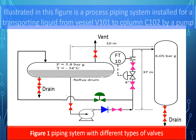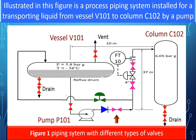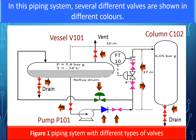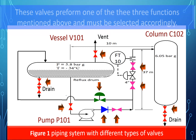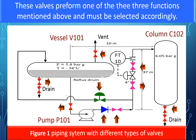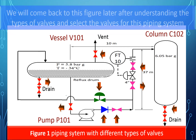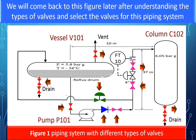Illustrated in this figure is a process piping system installed for transporting liquid from vessel V101 to another column C102 by a pump. In this piping system, several different valves are shown in different colors. These valves perform one of the three functions mentioned above and must be selected accordingly. You will come back to this figure later after understanding the types of valves and selecting valves for this piping system.